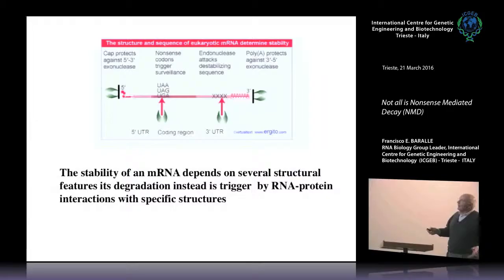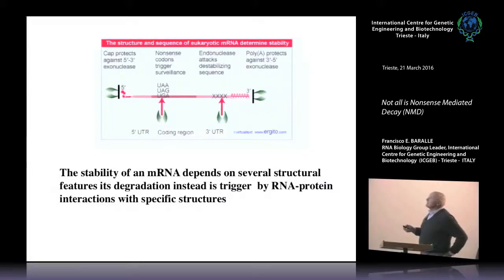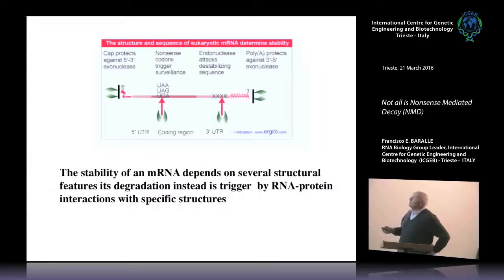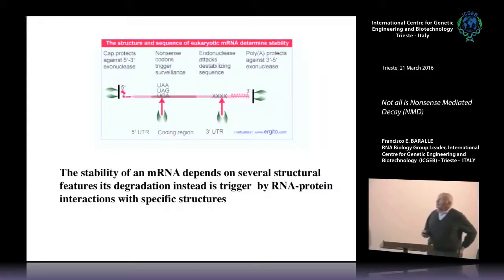There is, obviously, the cap, and in the 5' and 3' — particularly in the 3' UTR — there are several sequences that are involved in destabilizing or stabilizing. As I told you, when there is a mutation with a premature stop codon, the NMD looks after degrading the RNA.